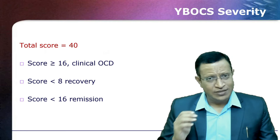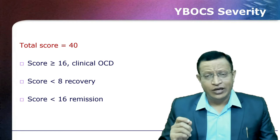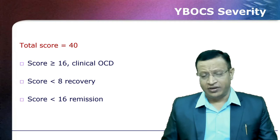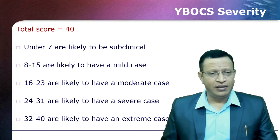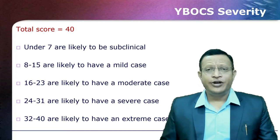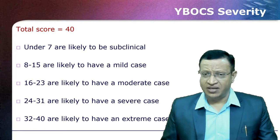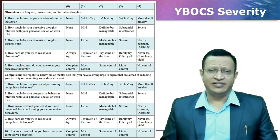The maximum score is 40. Clinical OCD is defined as a score of 16 or more. If the patient has less than 8, we call it recovery after treatment, and less than 16 means remission. Regarding severity: less than 7 is subclinical, 8 to 15 is mild, 16 to 23 is moderate OCD, 24 to 31 is severe, and anything from 32 to 40 is extreme — profoundly severely ill patients.